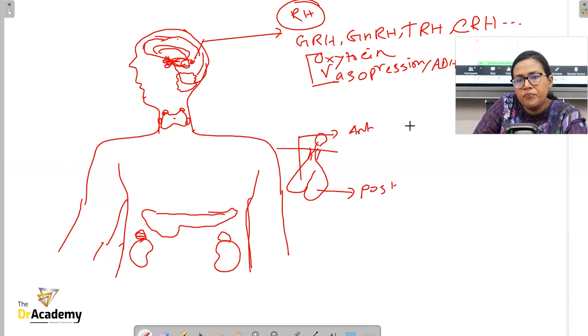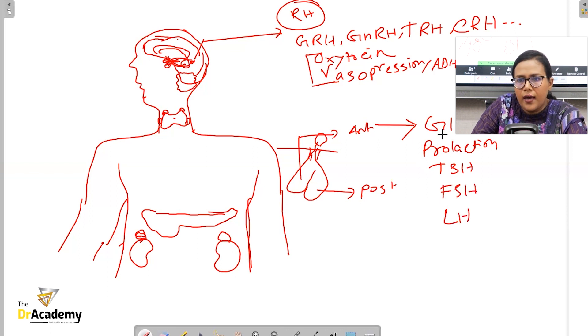From the anterior pituitary, the hormones are growth hormone, prolactin, thyroid stimulating hormone (TSH), follicle stimulating hormone (FSH), and luteinizing hormone (LH). From the posterior pituitary lies the oxytocin and the antidiuretic hormone.